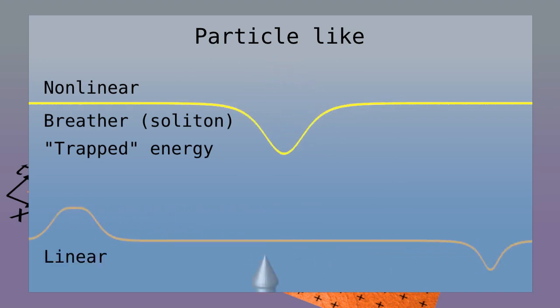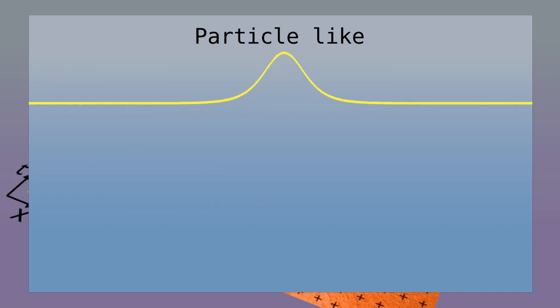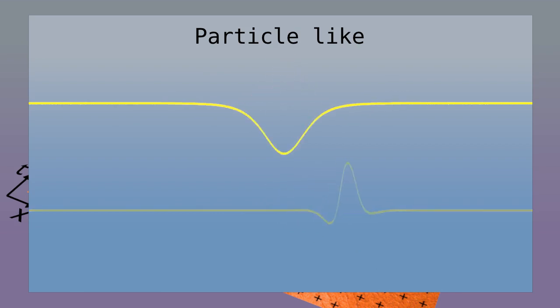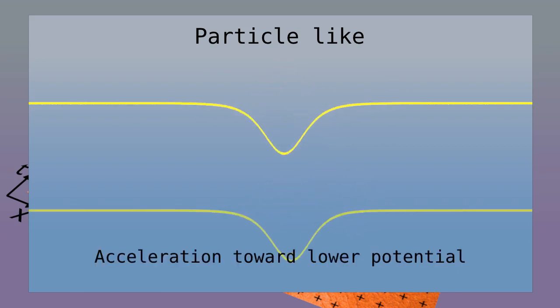In contrast, a linear string only has solutions that propagate. So the breather, it can sit still like a particle. In addition, it can move. And when it does, it contracts and time dilates and desynchronizes. So it behaves as a massive particle in special relativity. In addition, it can accelerate in the direction of lower potential, like particles in curved space-time. I talk more about breathers in my videos on relativity.